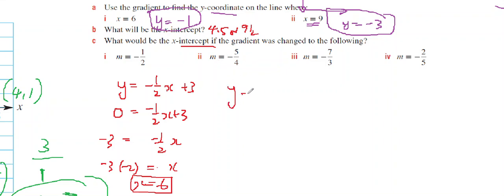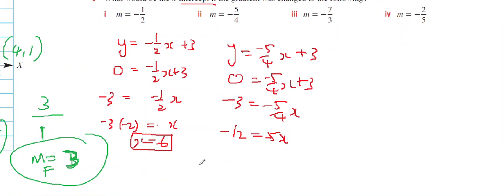Looking at the next one, y equals negative 5 on 4x plus 3. 0 equals negative 5 on 4x plus 3. Negative 3 equals negative 5 on 4x. Multiply by 4, so negative 3 times 4 is negative 12, equals negative 5x. Negative 12 on negative 5 equals x. x equals 12 fifths.